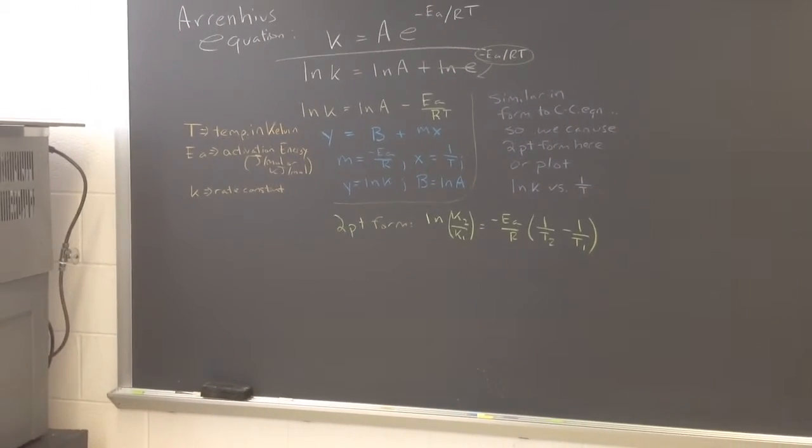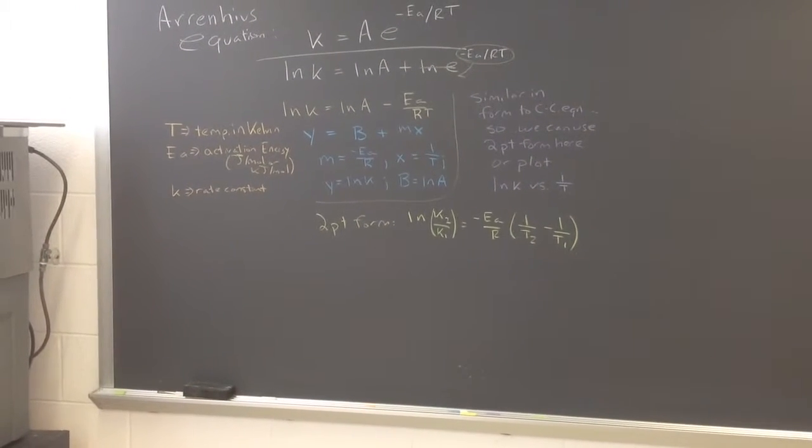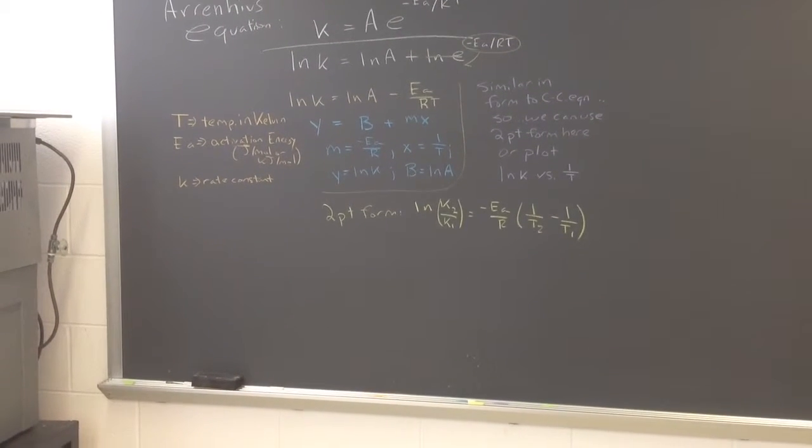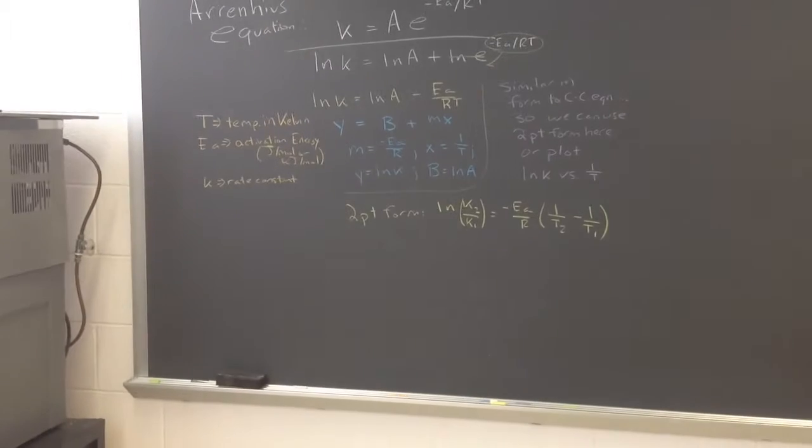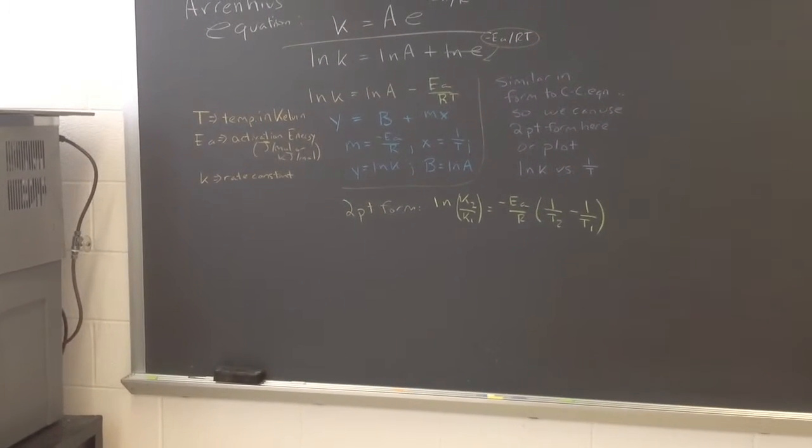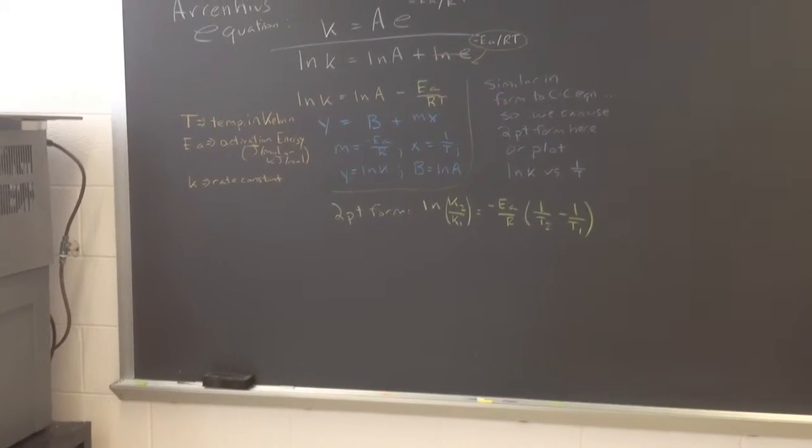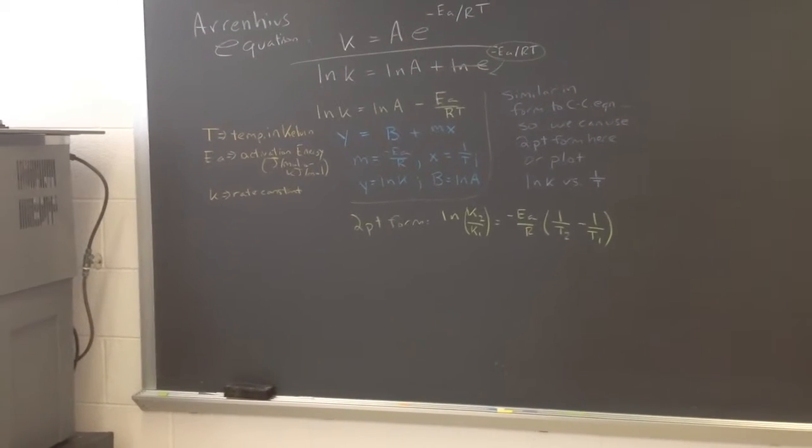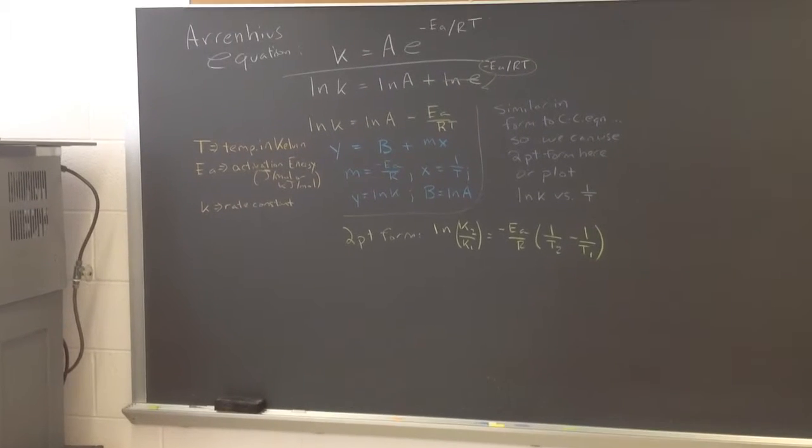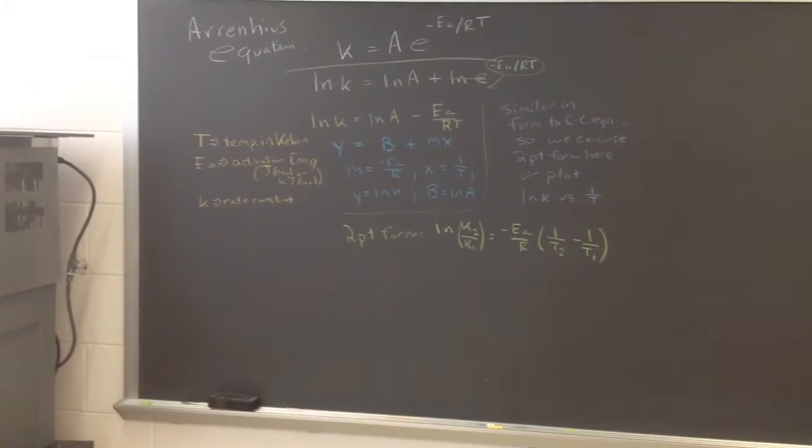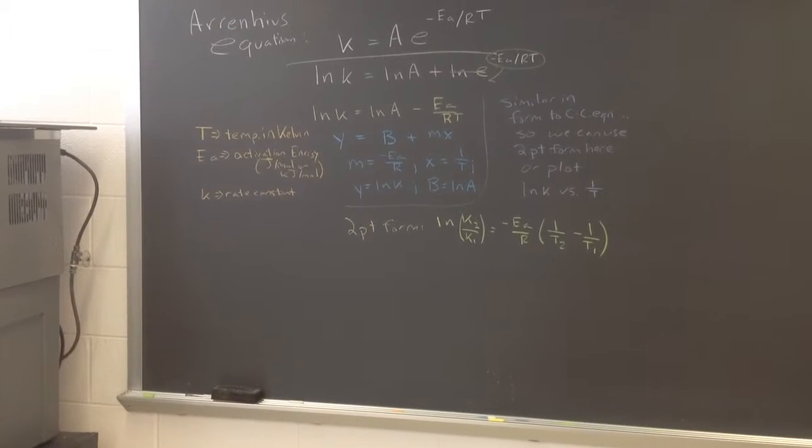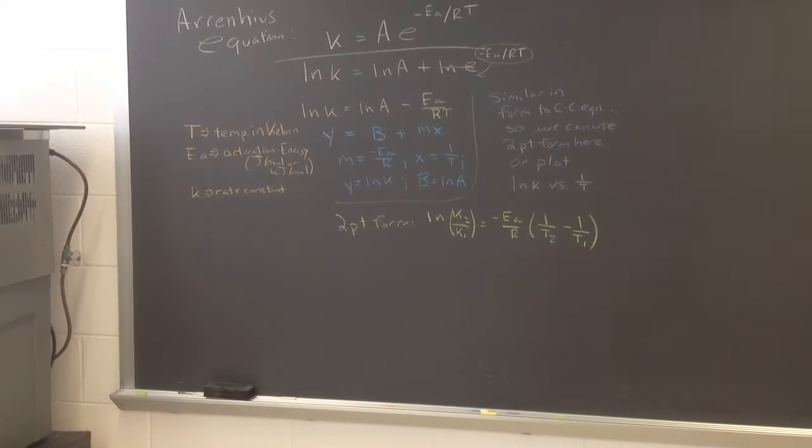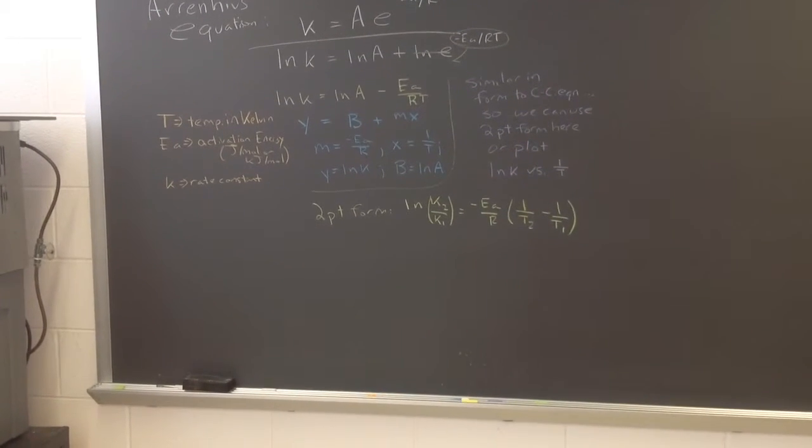So we should see here now, this is similar in form to the Clausius-Clapeyron equation, where we have a straight line. It's obviously different units, different things here, but like that we can have a plot. In this case, the natural log of the rate constant versus one over T, which if we see in our blue color here on the board, remember B, B is the natural log of A, our frequency factor, the y-intercept.